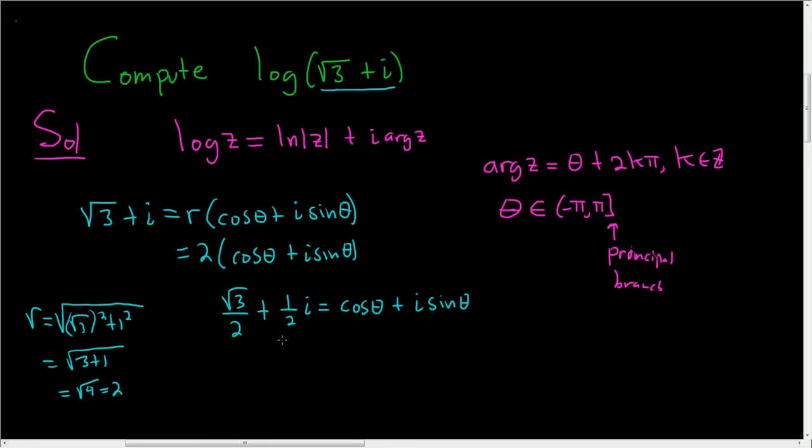Now two complex numbers are equal if and only if the real and imaginary parts are equal. So this means that the cosine of theta is equal to the square root of 3 over 2, and the sine of theta is equal to 1 half.